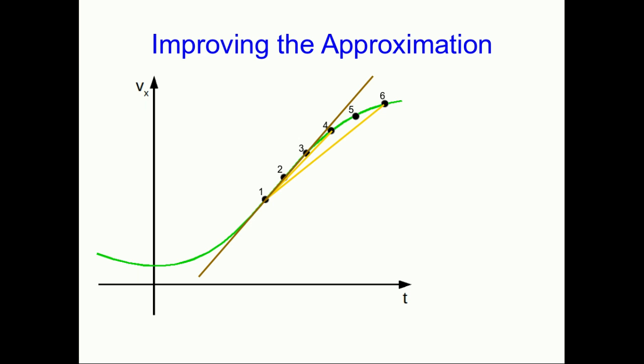So, if you can only approximate it with these average accelerations and velocities, is there a way to improve the approximation with the data set you have?